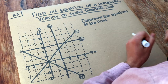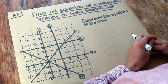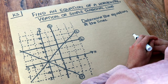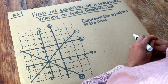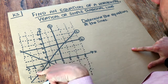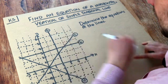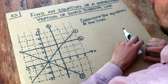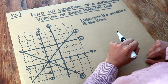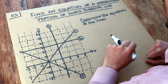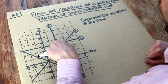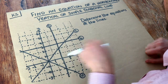Hello and welcome to this Dr. Ross Mass key skill video on finding an equation of a horizontal, vertical, or simple diagonal line. We have these different lines plotted on an xy axis and we want to find the equation of each. Finding the equation of a line means finding some rule which each point on that line will obey.